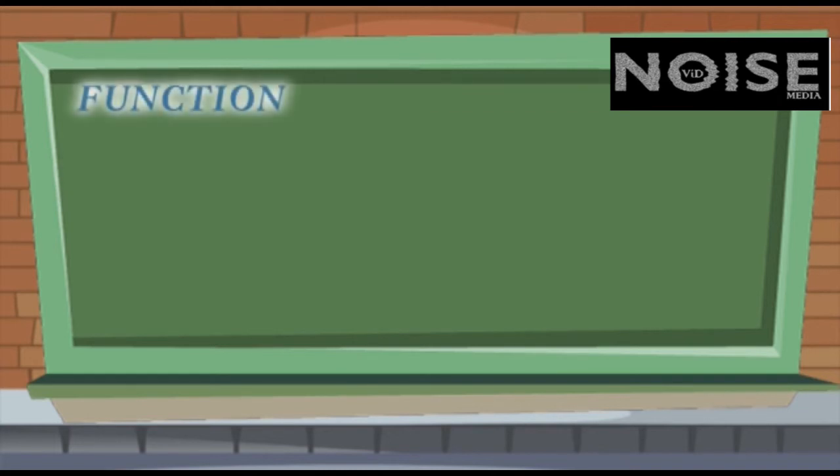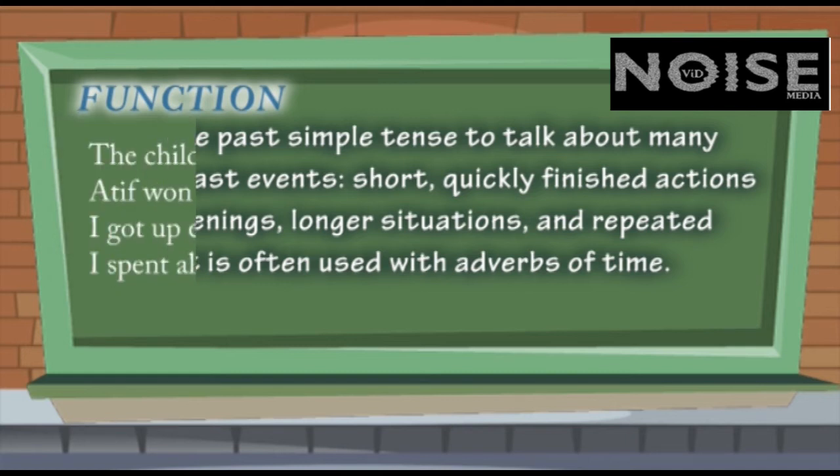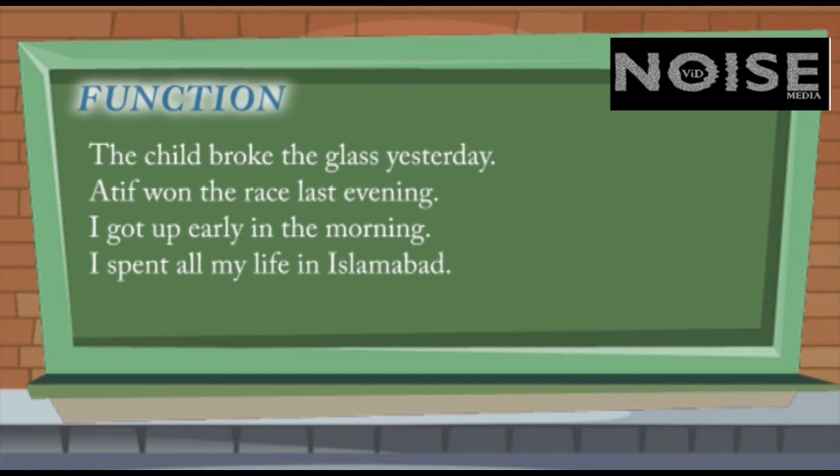Now the function. We use these tenses for some reason, and each tense is used for a certain reason. We use the past simple tense to talk about many kinds of past events: short, quickly finished actions and happenings, longer situations, and repeated events. It is often used with adverbs of time. For example, The child broke the glass yesterday. Atif won the race last evening. I got up early in the morning. I spent all my life in Islamabad.